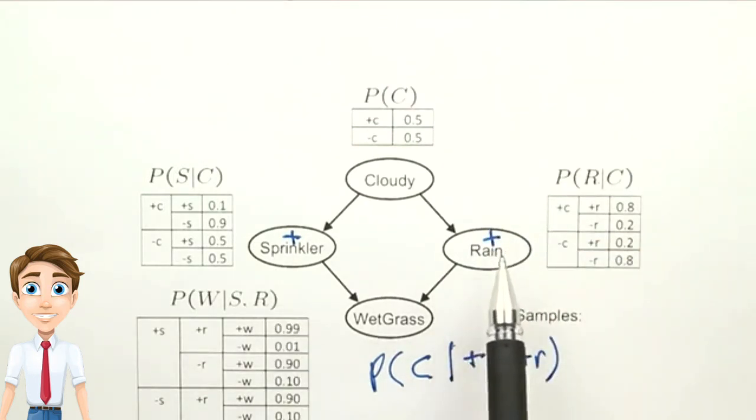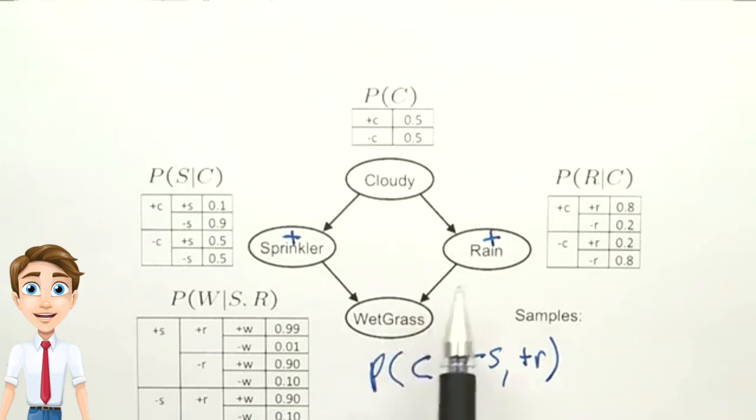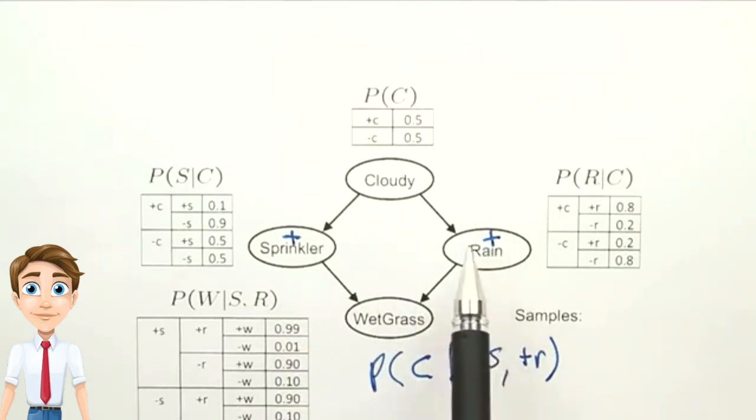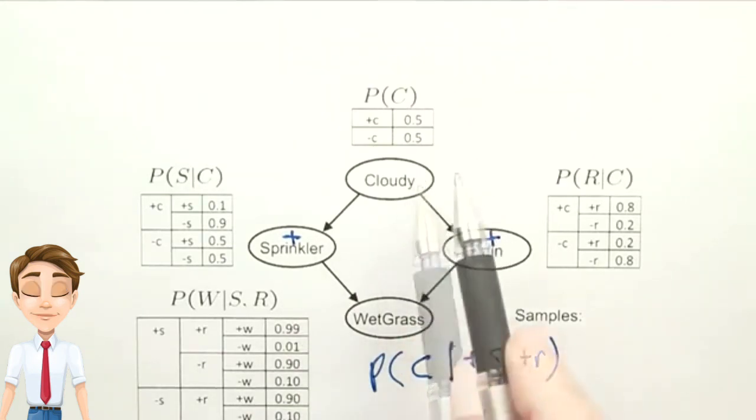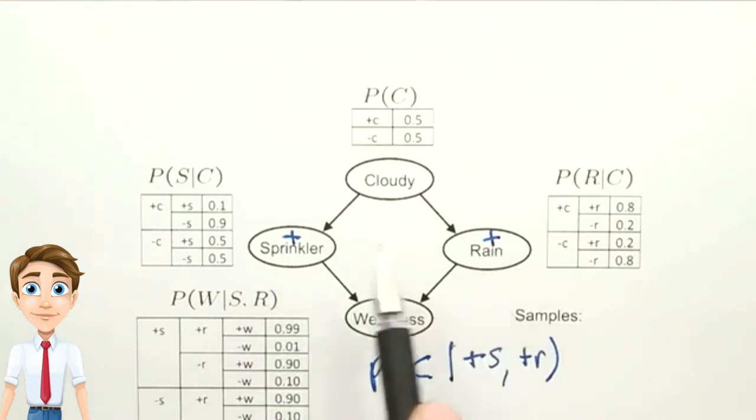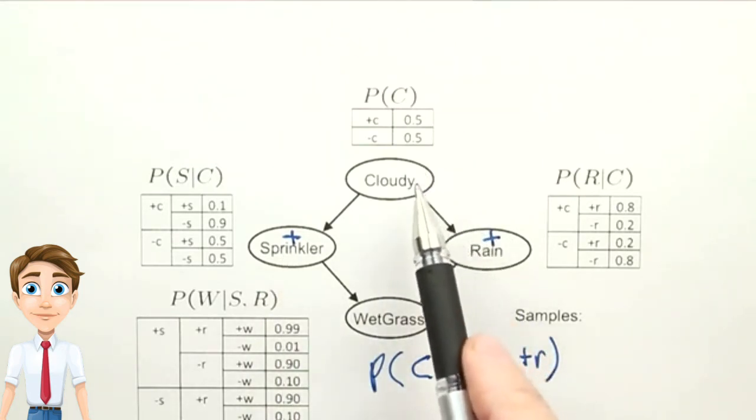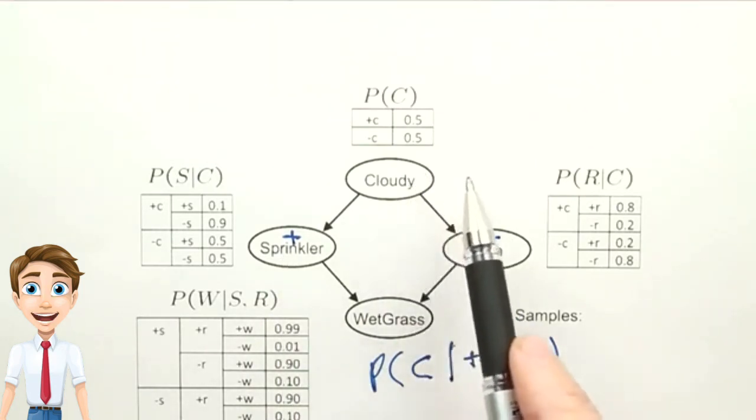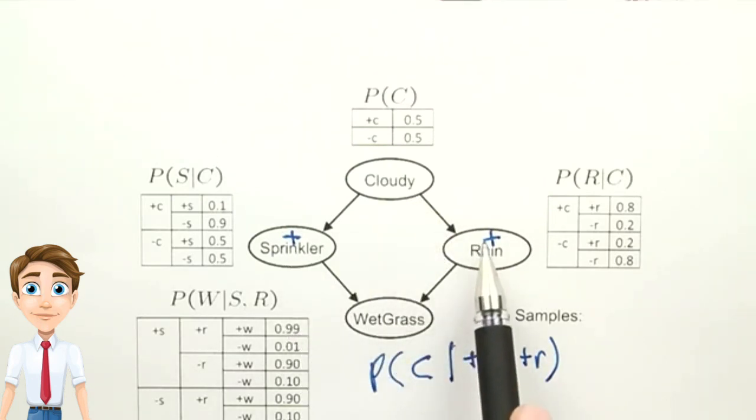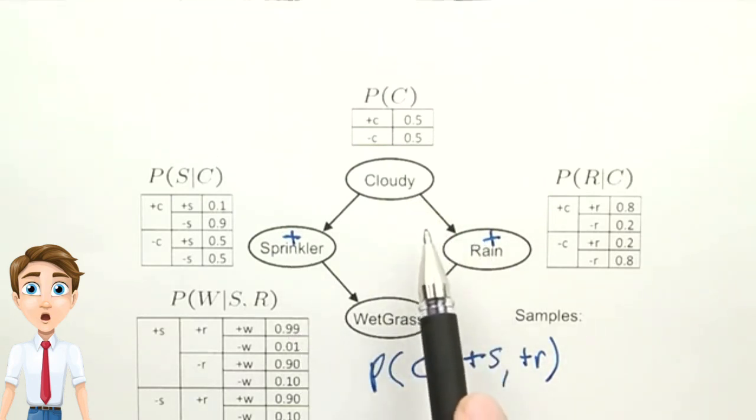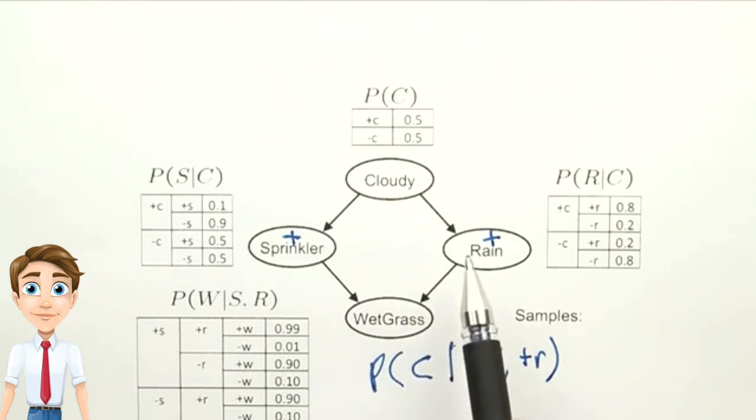Since we use the evidence when we generate a node that has that evidence as parents, the wet grass node will always get good values based on that evidence. But the cloudy node won't, and so it will be generating values at random, without looking at these values, and most of the time, or some of the time, it will be generating values that don't go well with the evidence. Now we won't have to reject them like we do in rejection sampling, but they'll have a low probability associated with them.